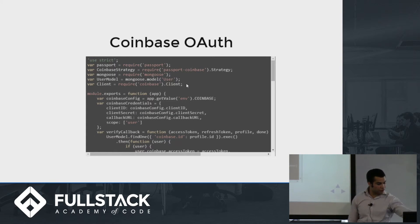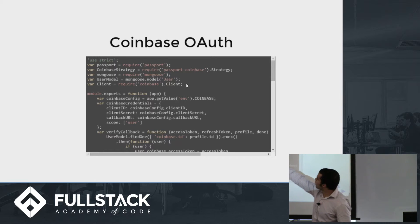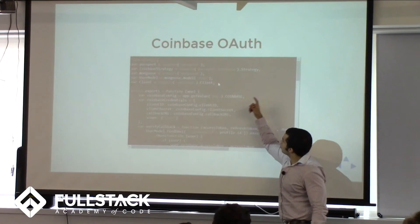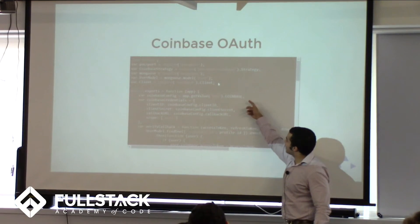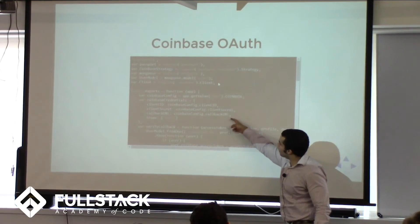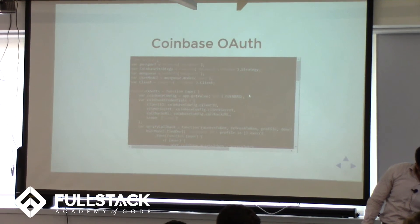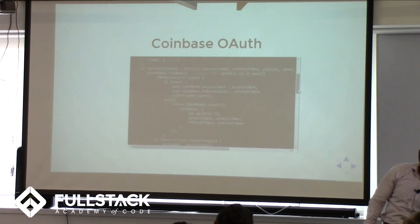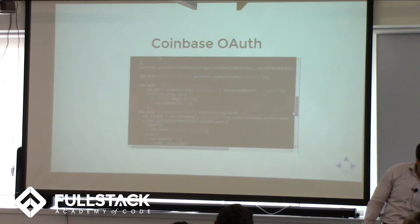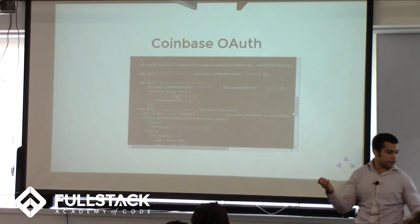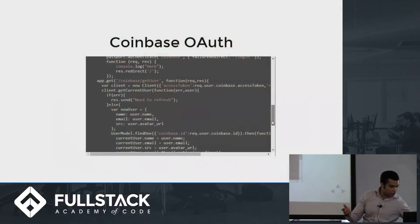You have client ID, client secret, and callback URL — just like any other OAuth. You hit the routes: slash auth, slash callback, slash Coinbase. It's pretty much copy and paste from Google or anything else, and you get all this information. You have scope as well. The Coinbase API is really great.